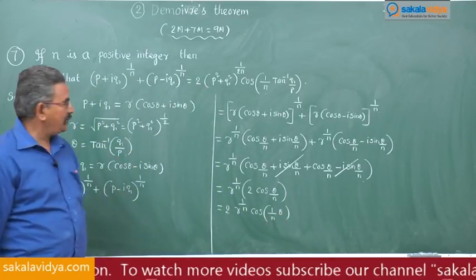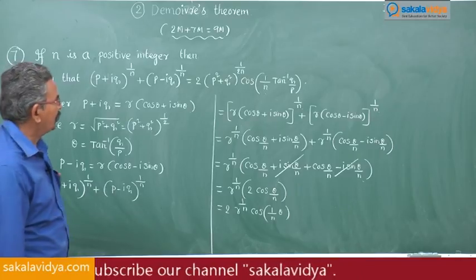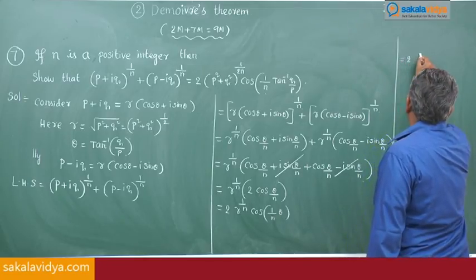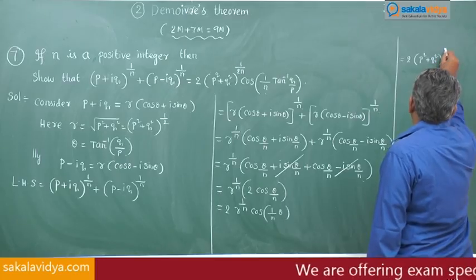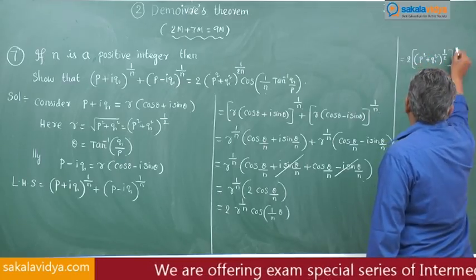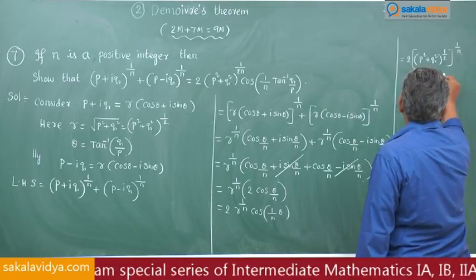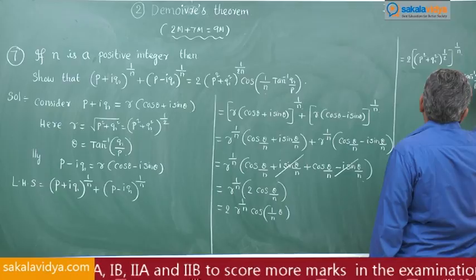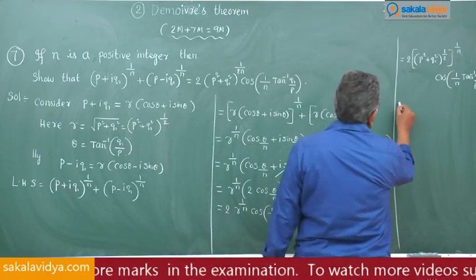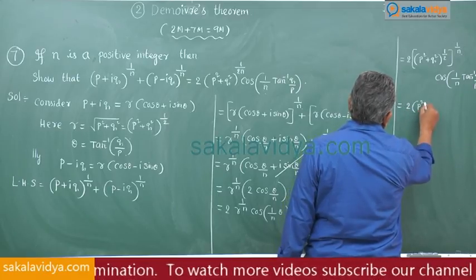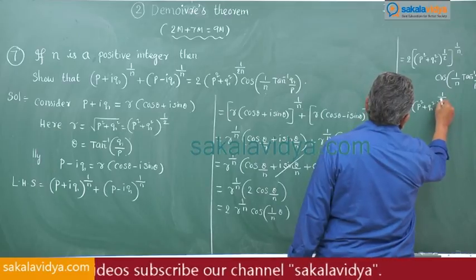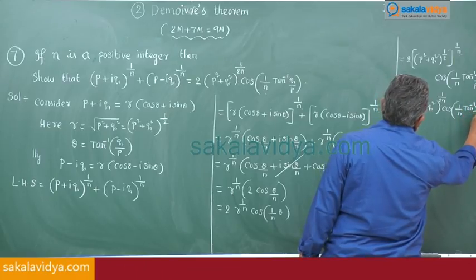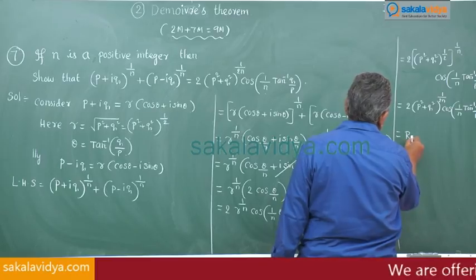Replacing r = (p² + q²)^(1/2) and θ = tan⁻¹(q/p), this equals 2(p² + q²)^(1/2 · 1/n) · cos(1/n · tan⁻¹(q/p)), which simplifies to 2(p² + q²)^(1/2n) · cos(1/n · tan⁻¹(q/p)). This is the right-hand side, hence proved.